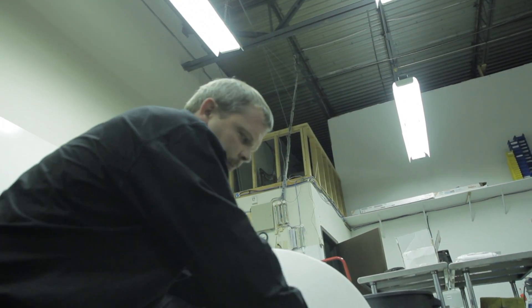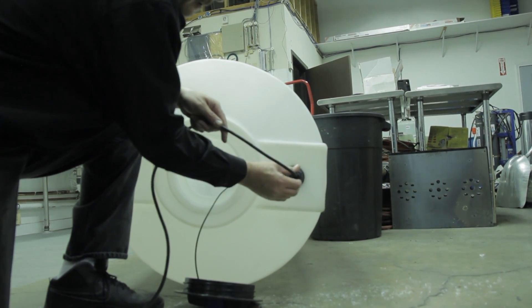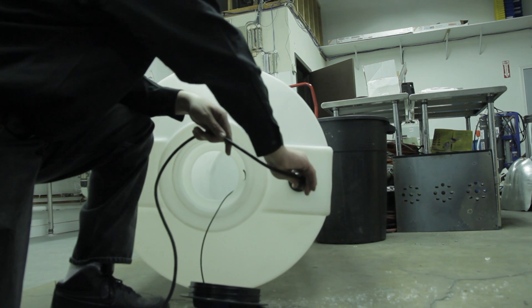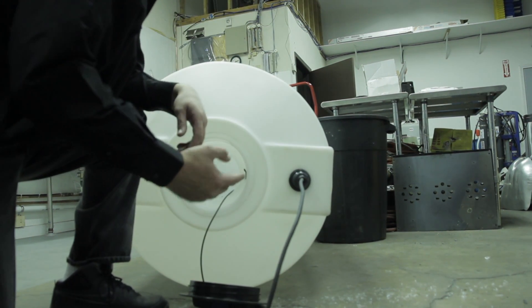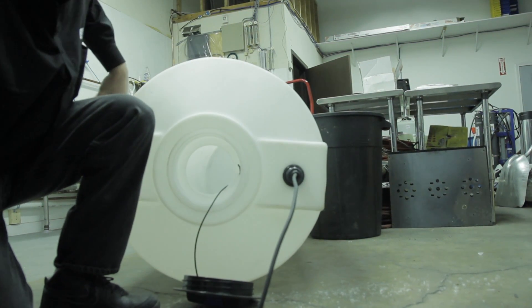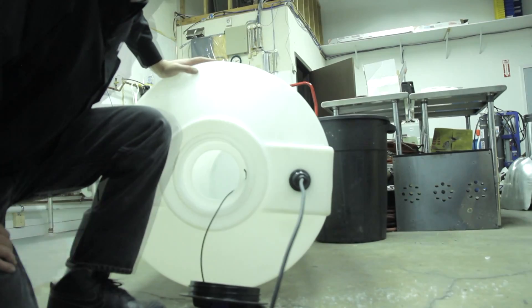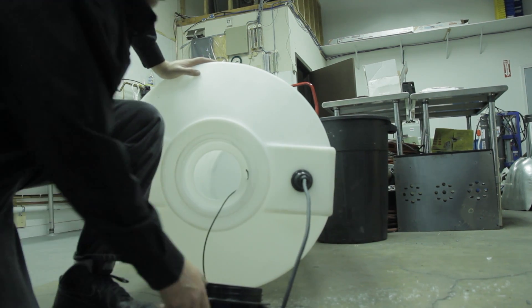On this particular system, you can see that we have a strain relief fitting here. This strain relief fitting can be loosened and once it's loosened, then you have the ability to adjust the float up and down. You want to make sure that you don't adjust this down so far that when the float comes up, it hits the side of the tank because that'll inhibit its ability to work properly. Once you have it adjusted properly and that's tightened down, then we can stand the tank back up.